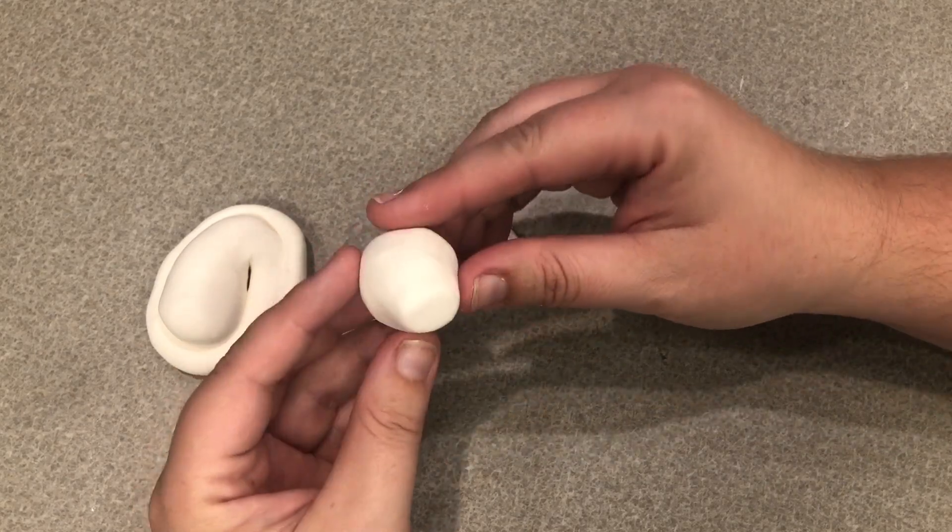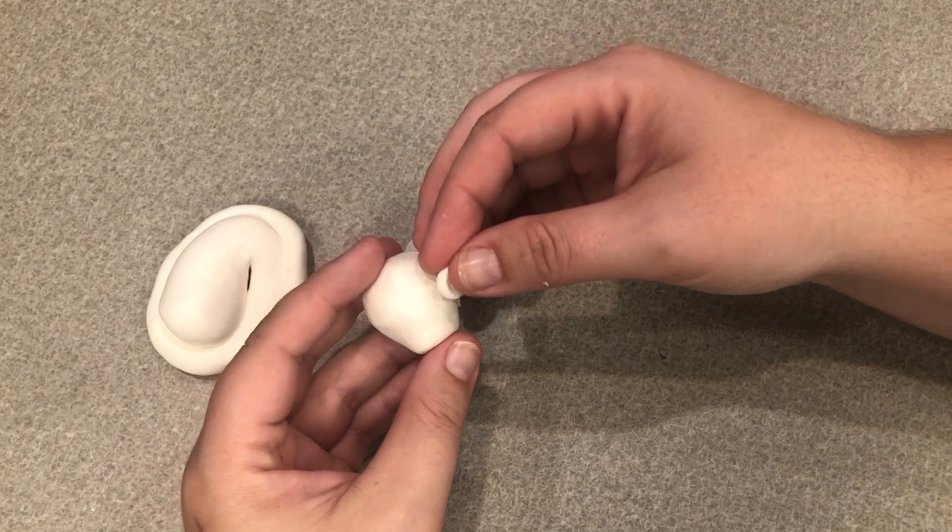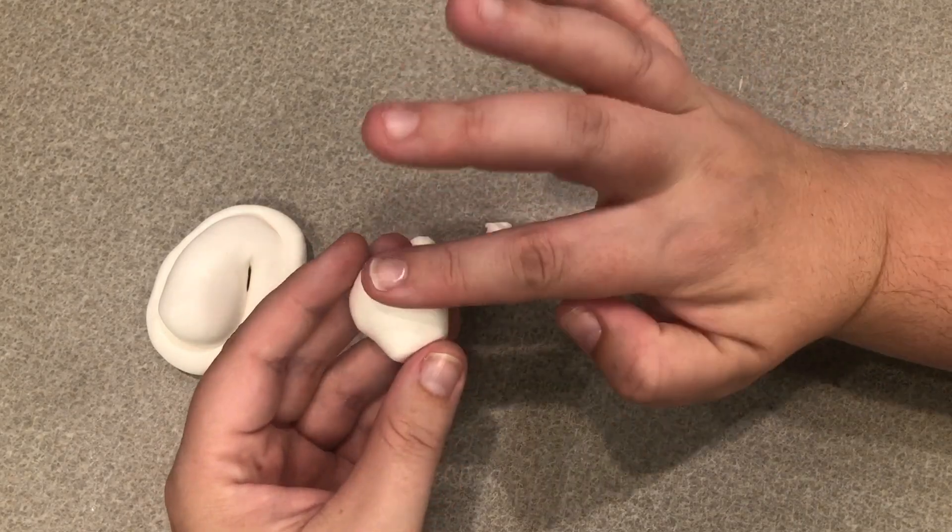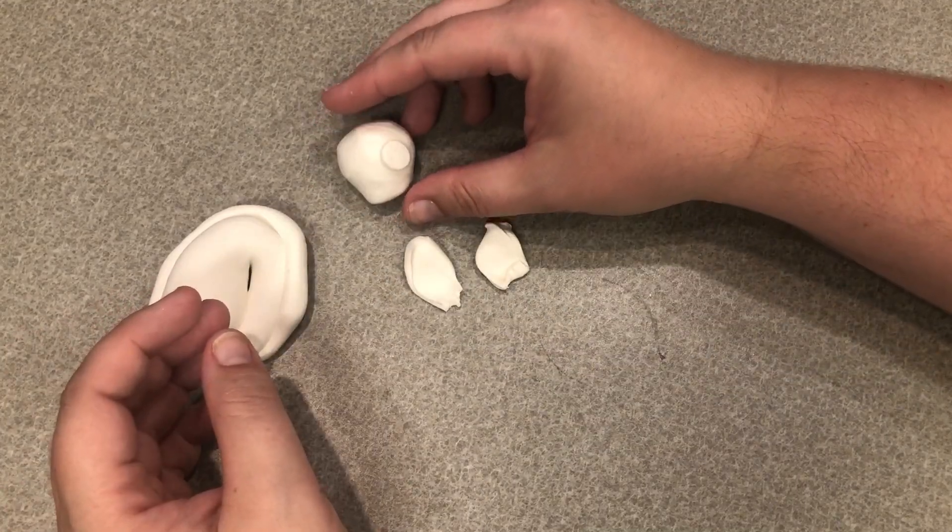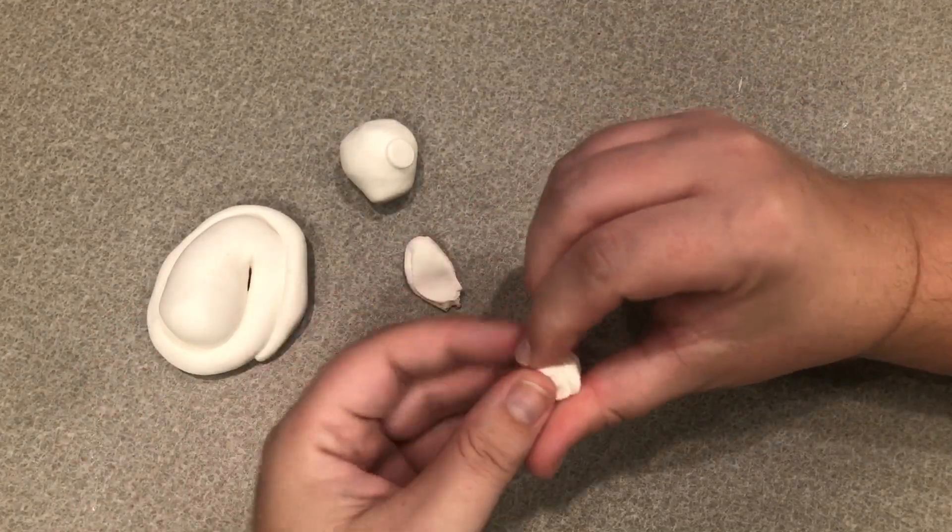Once we have the snout how we like it then we can go ahead and grab our little dot on his head and just stick that gently on there. I'm going to set that down for a moment to make the ears.